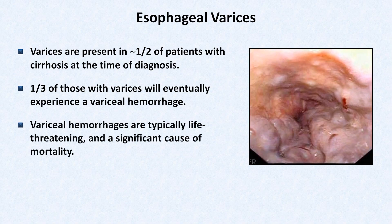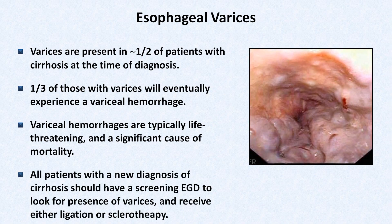Variceal hemorrhages are typically life-threatening and a significant cause of mortality, with a 6-week mortality rate of 15% to 20%. Because of this, and because they can be treated before hemorrhage occurs, all patients with a new diagnosis of cirrhosis should have a screening EGD to look for their presence, and to have them potentially treated right then if specific criteria are met.